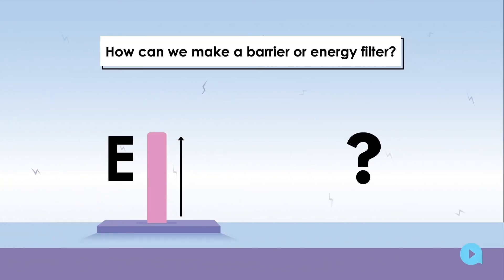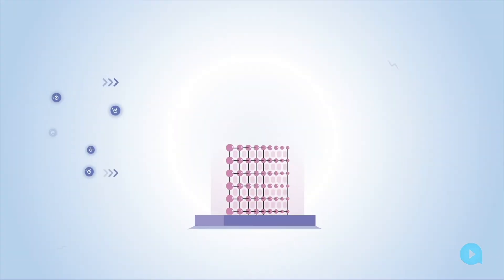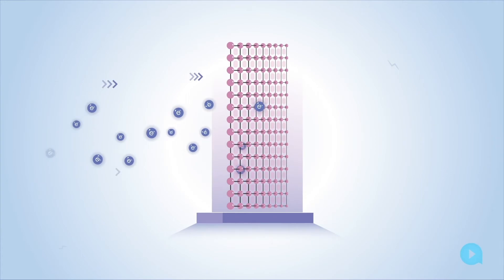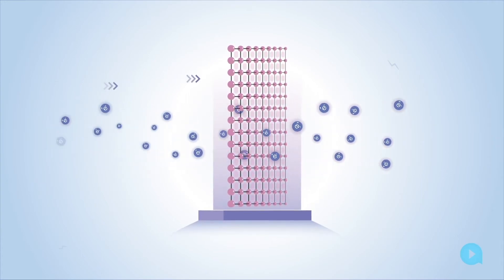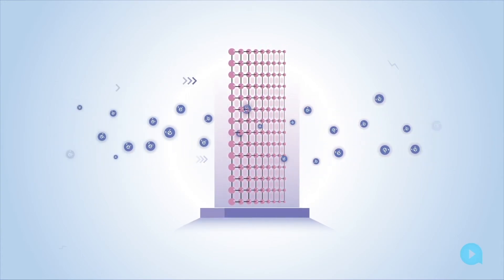How can we make a barrier or energy filter? Our preferred method is to use physics to design short molecules to behave as electron filters. They could be so good that they work better than any other type of thermoelectric material.